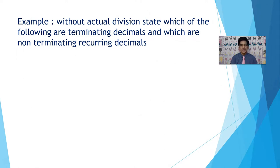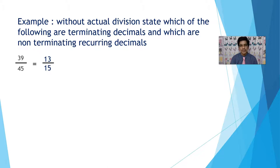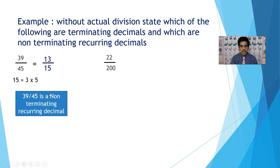State which of the following are terminating decimals and which are non-terminating, without actual division. Example: 39 by 45. First cancel common factors: both have factor 3 and 13 and 15, giving 13 by 15. Factorize the denominator: 15 equals 3 into 5. Since there is a factor 3 other than 2 and 5, 39 by 45 is a non-terminating and recurring decimal.